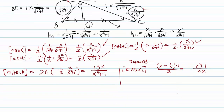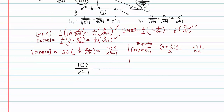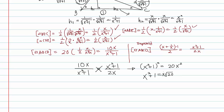Setting these two area expressions equal: 10X over X squared plus 1 equals X squared plus 1 over 2X. Cross-multiplying: X squared plus 1 squared equals 20X squared. Taking the square root: X squared plus 1 equals square root of 20 times X. This gives the quadratic X squared minus square root 20 times X plus 1 equals 0.